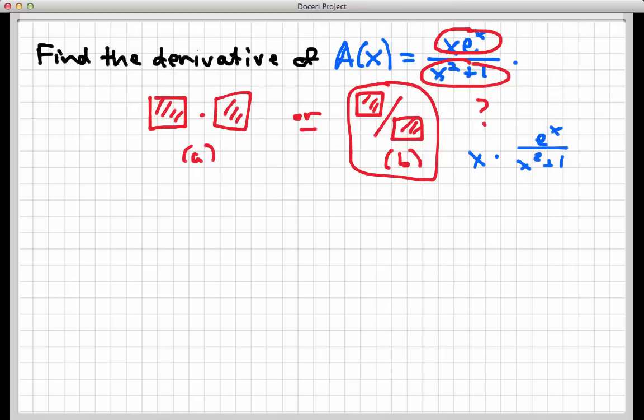Let me go down here to the bottom, and let's start on the quotient rule. First of all, by writing down a clean copy of my function. That's A(x) is x e to the x over x squared plus 1.